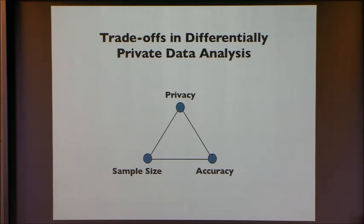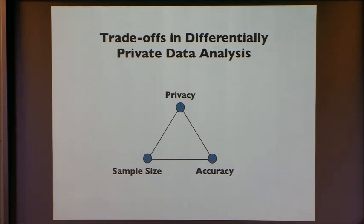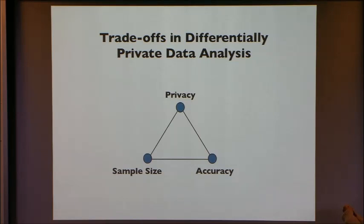What are the trade-offs when you want to do machine learning or data analysis with differential privacy? It turns out there is typically a three-way trade-off between privacy, accuracy, and sample size. You could get both privacy and accuracy, but your cost is going to be a lot more data. Similarly, if you are willing to sacrifice accuracy, then you could get privacy and sample size, and vice versa. This theme will show up throughout the talk.